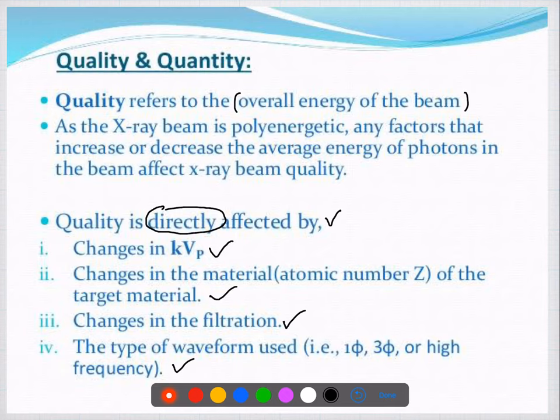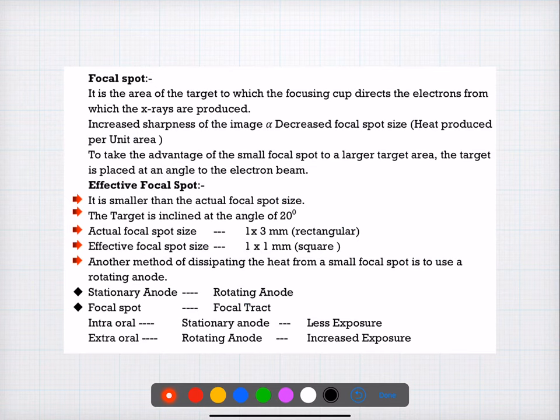Coming to the seventh question — it's a direct question related to the anatomy of the x-ray tube. Which of the following is a false statement? Option A: tungsten target is set in the copper block — that's right. Option B: dental x-ray tube is self-rectified — also right. Option C: filters reduce the exposure time — that is not related at all. Option D: the grid reduces secondary radiations reaching the film — that's a right statement. So the wrong statement in question number seven is C.